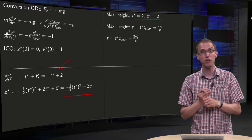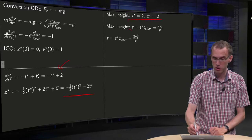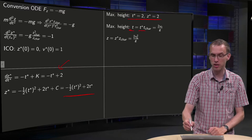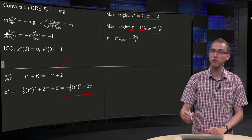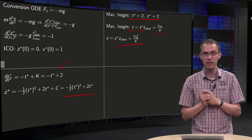And then when you have your non-dimensional answers, you can convert back to the dimensional quantities because your dimensional t equals t* times t_char equals t* times v0 over g and similarly for the maximum height.